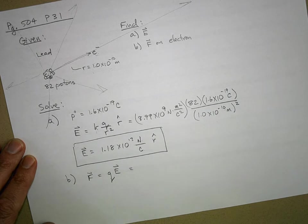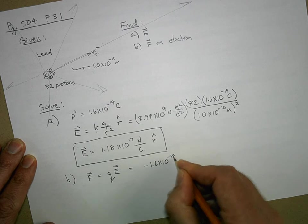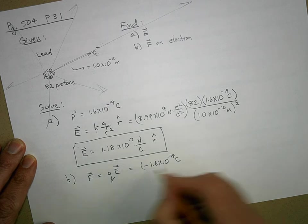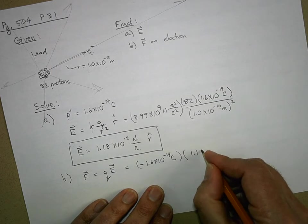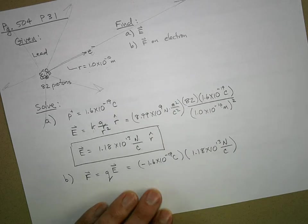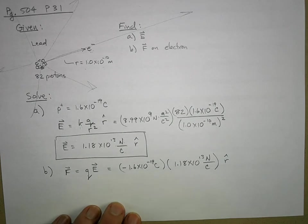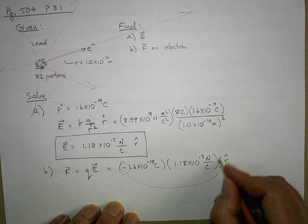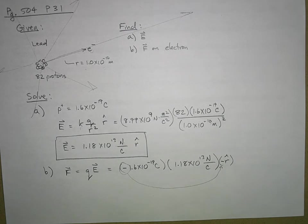What is the charge on an electron? It's negative 1.6 times 10 to the negative 19 coulombs times 1.18 times 10 to the 13 newtons per coulomb in the r hat direction. This negative really should be transferred over to this unit vector, so I'm going to say it's in the negative r hat direction, which means the electron is being pulled in. Negative r hat means pulled inward.